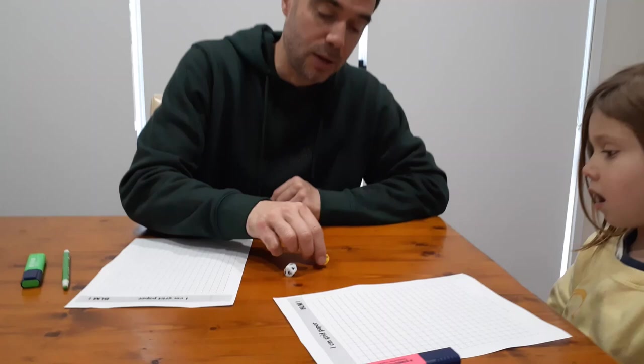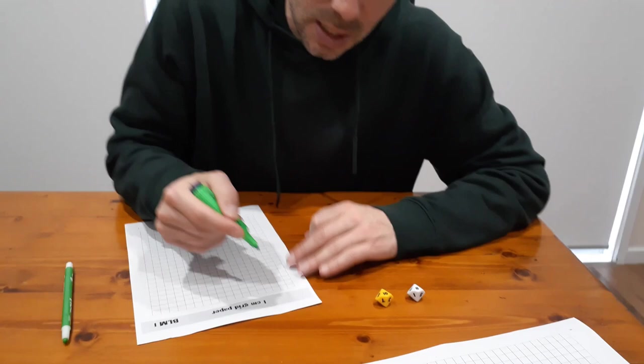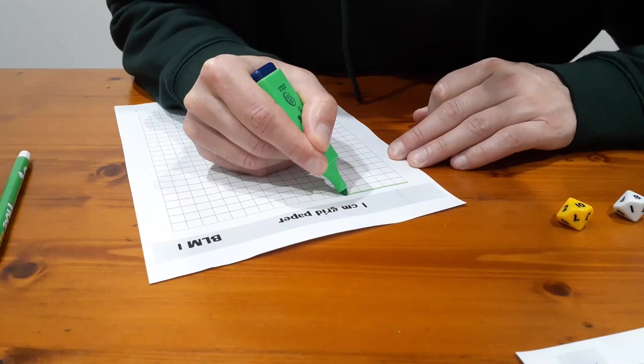The aim of the game is to have the most of your sheet colored in compared to mine. I'll go first. Whatever you roll, you're going to color in. I've got an eight and a ten, so I'm going to color in eight times ten. Do you know what eight groups of ten is?